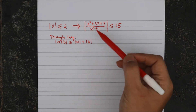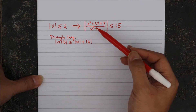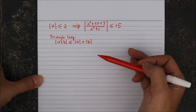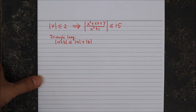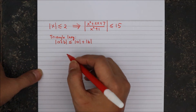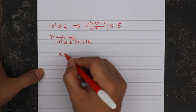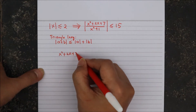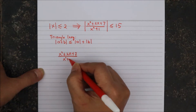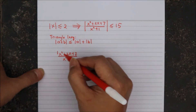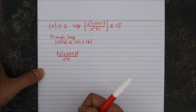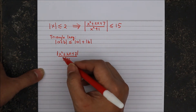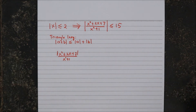We are supposed to show the right hand side: the absolute value of x squared plus 2x plus 7 divided by x squared plus 1. First of all, this x squared plus 1 on the bottom makes it difficult to use the inequality directly. Notice that this expression can be written as the absolute value of the top divided by the absolute value of the bottom. But since x squared plus 1 is always positive, the value with or without absolute value remains the same.